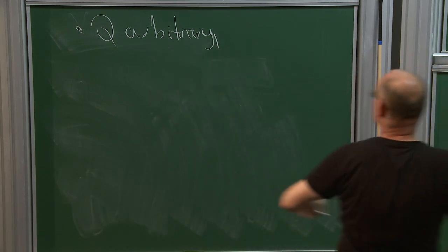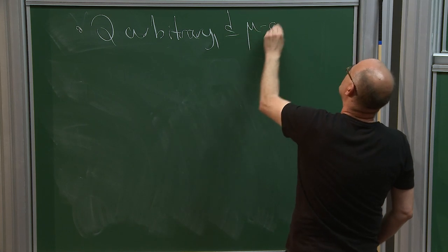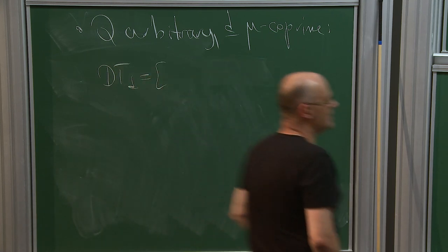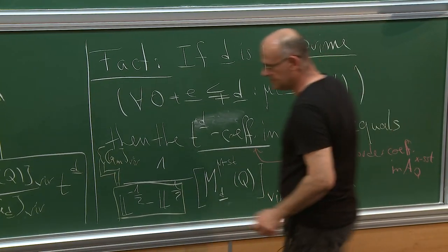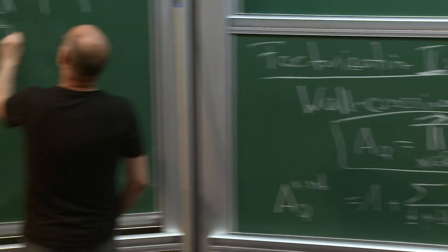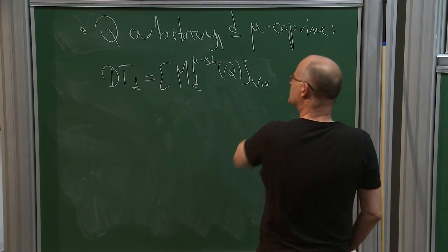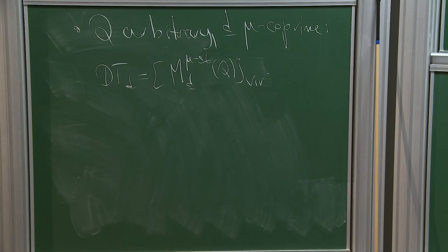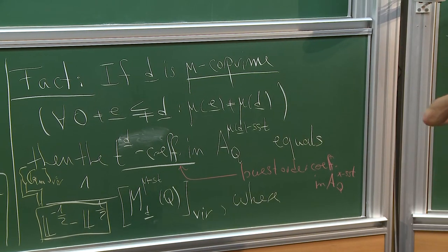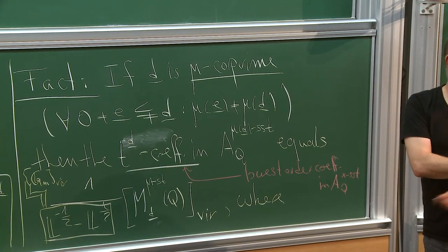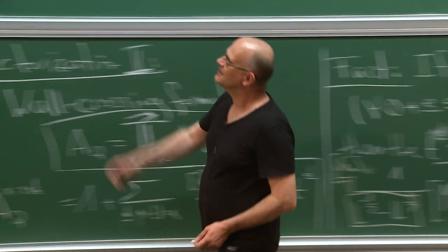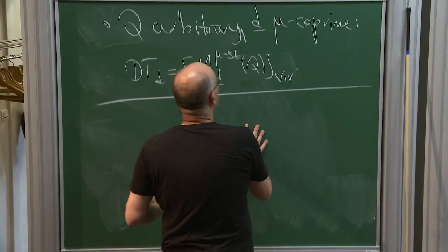Third example: Q is arbitrary and we need the assumption that d is coprime for the chosen stability. Then the DT invariant is, as we have seen from the lowest order terms of the local generating series, the virtual motive of the stable moduli space M_{d,mu-st}(Q). Because this is precisely the lowest order term in this local generating series, and if you rewrite this as an infinite product, these lowest order terms survive. So in all cases apparently the DT invariant carries some geometric information.